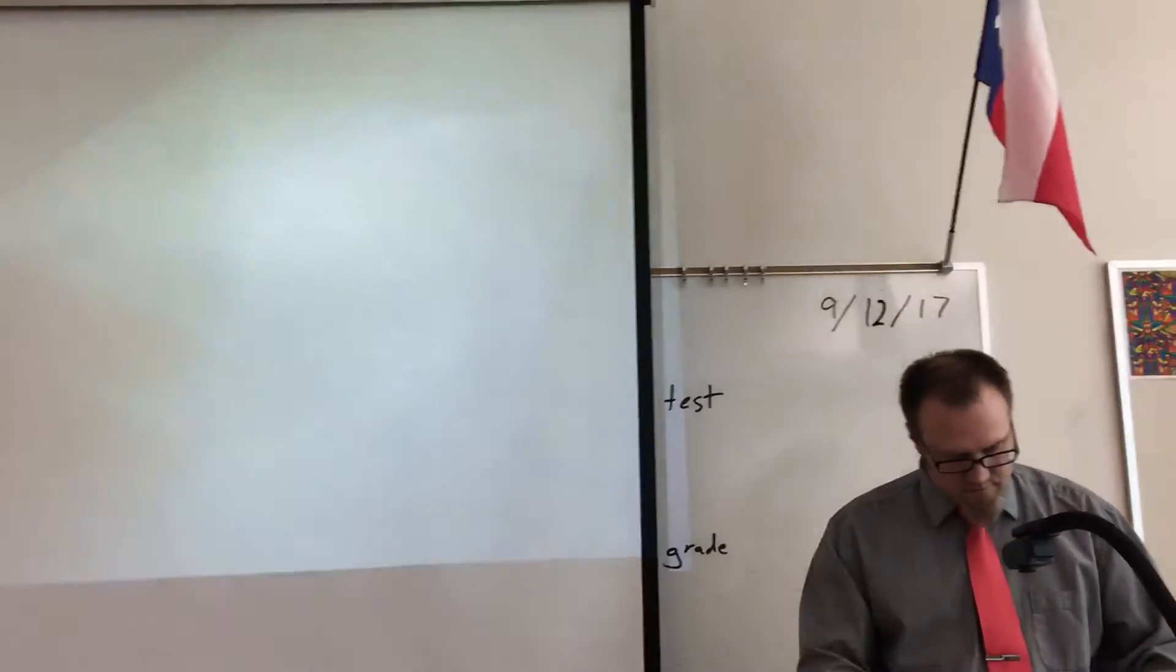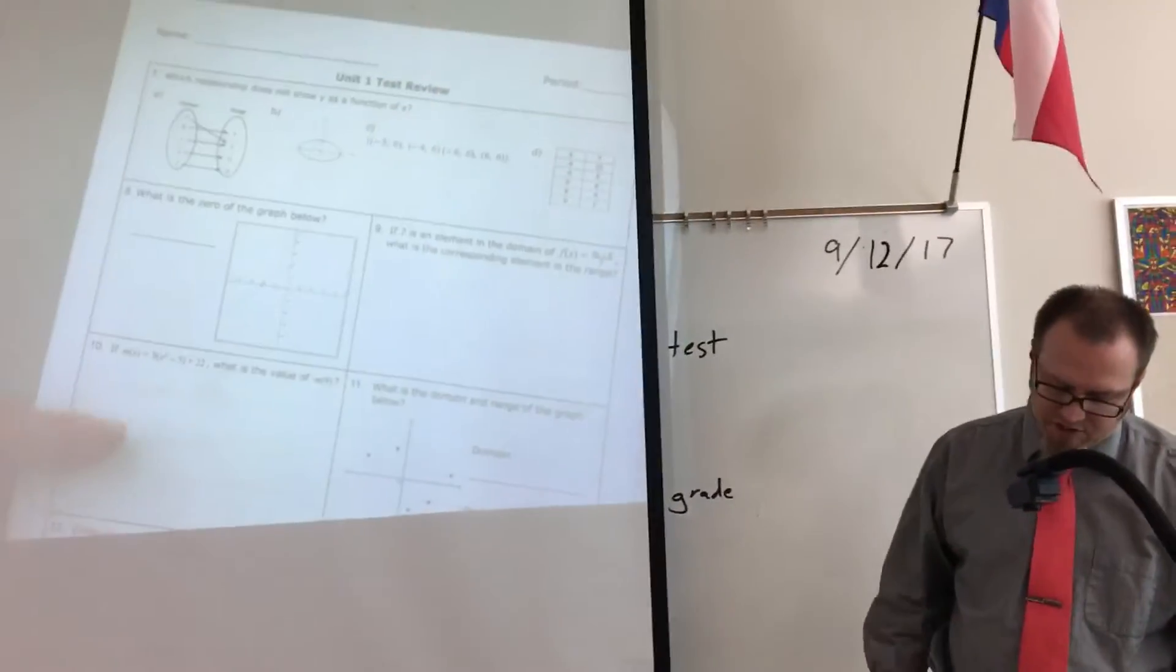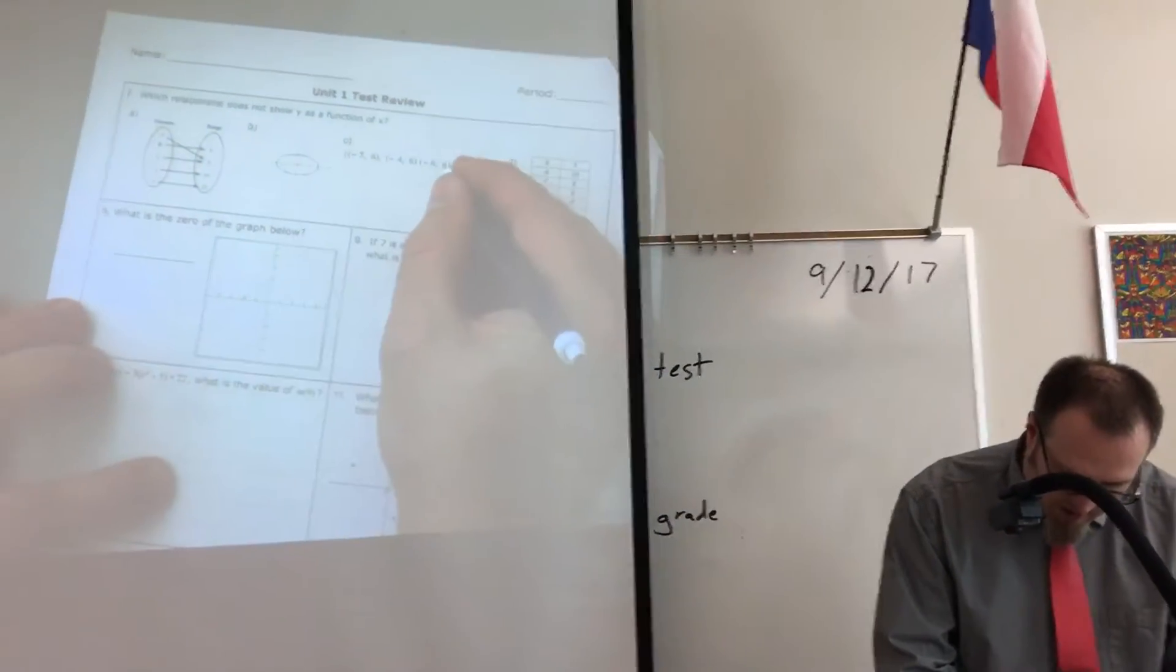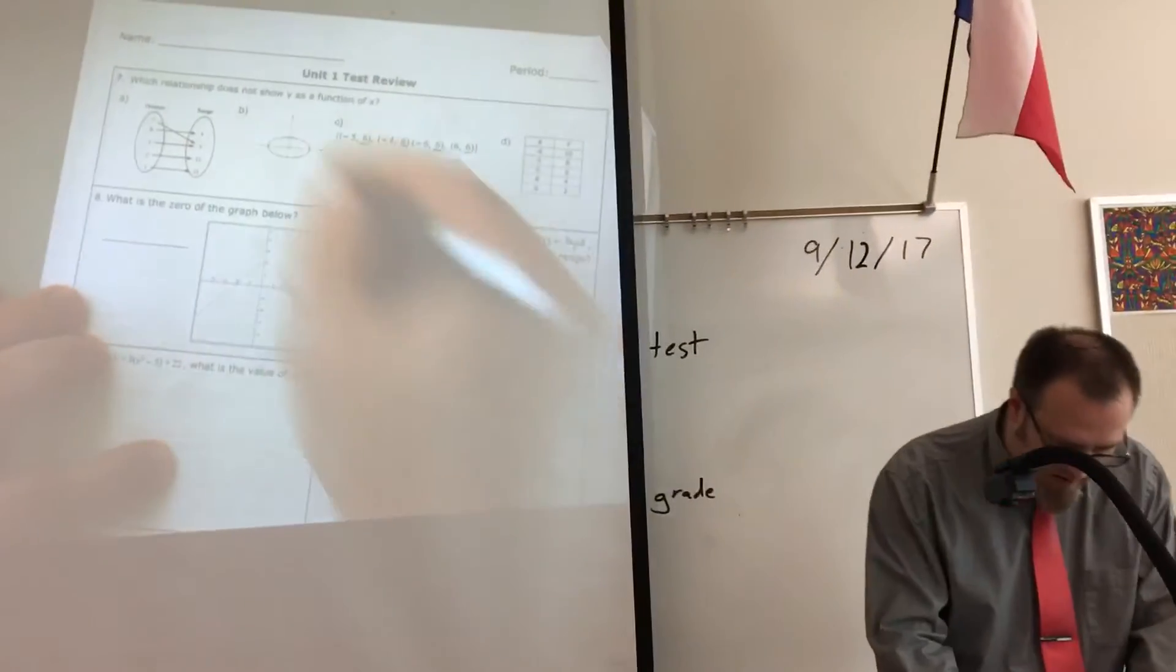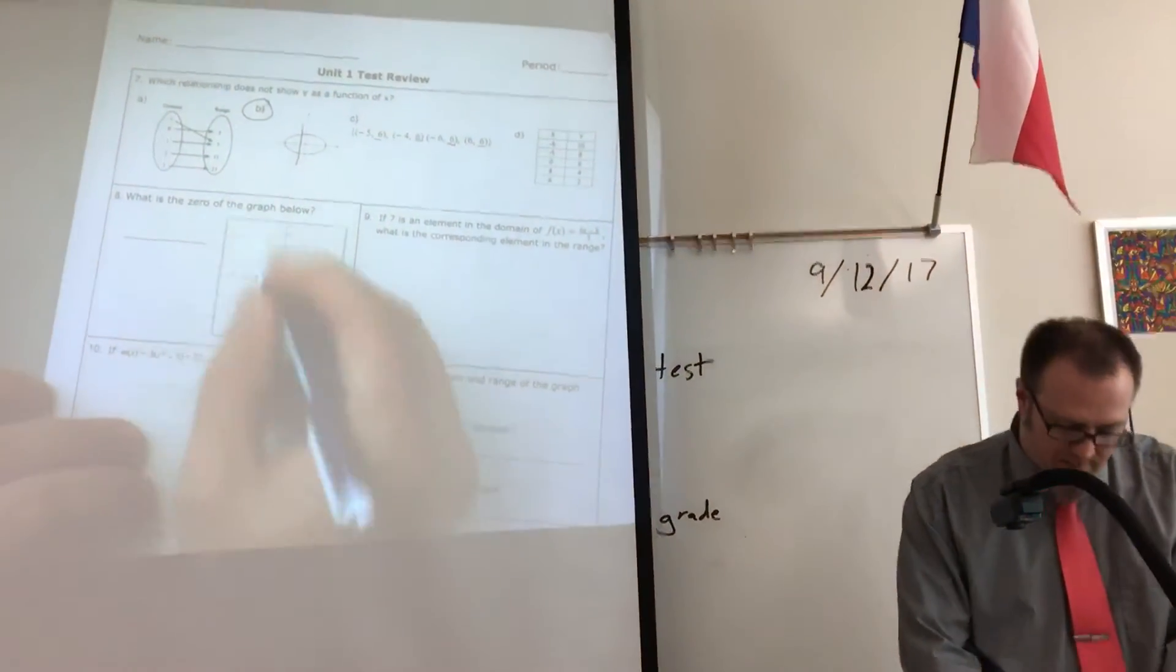Okay, moving on. Which relationship is not a function? If our X's repeat, it's not a function. It's okay on this one that our Y's repeat. That doesn't bother anything. It's the X's that can't repeat. This one doesn't pass the vertical line test.